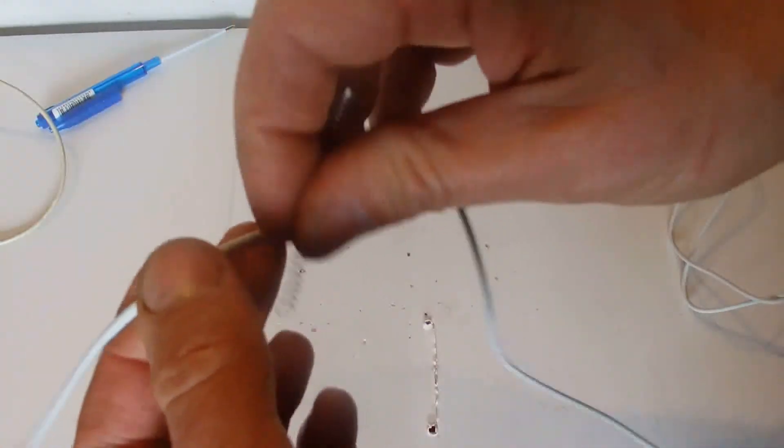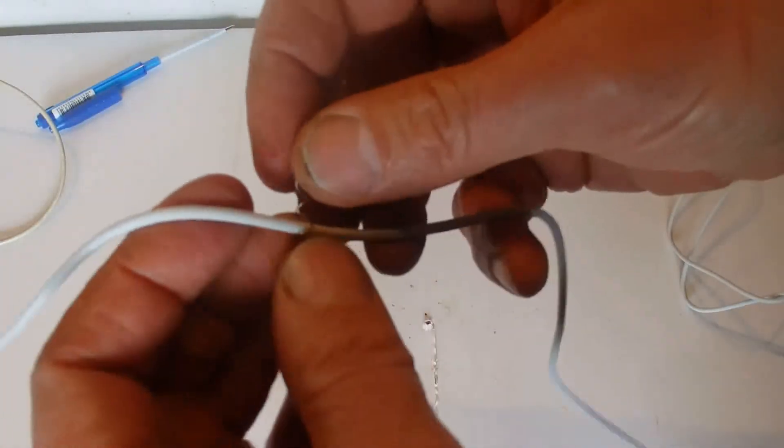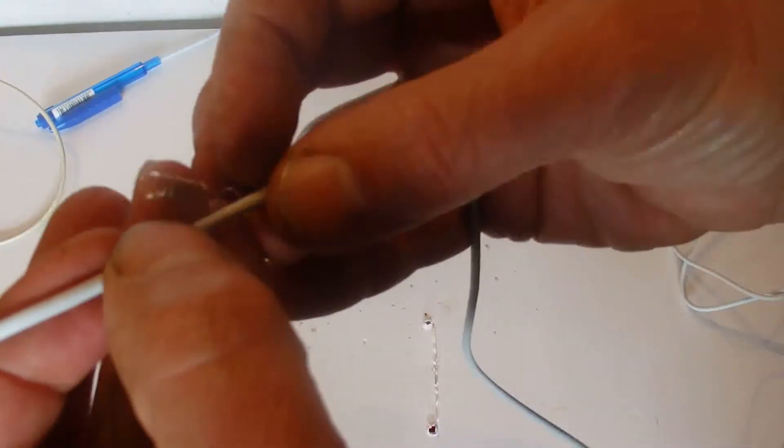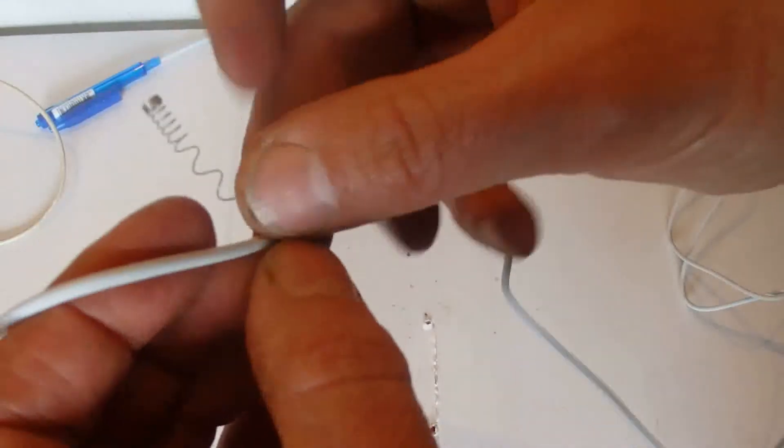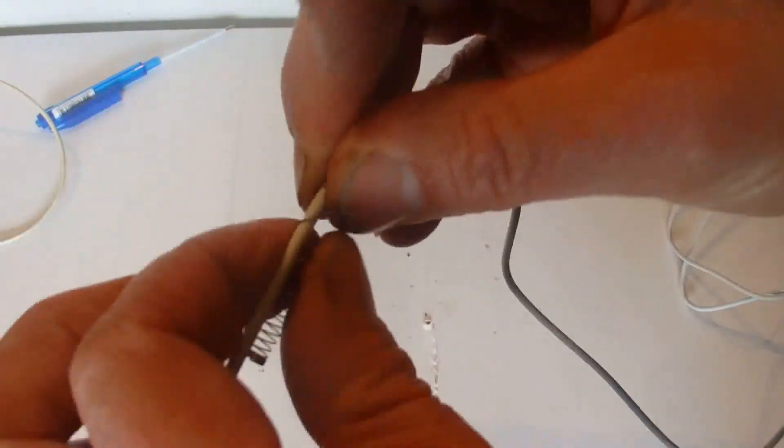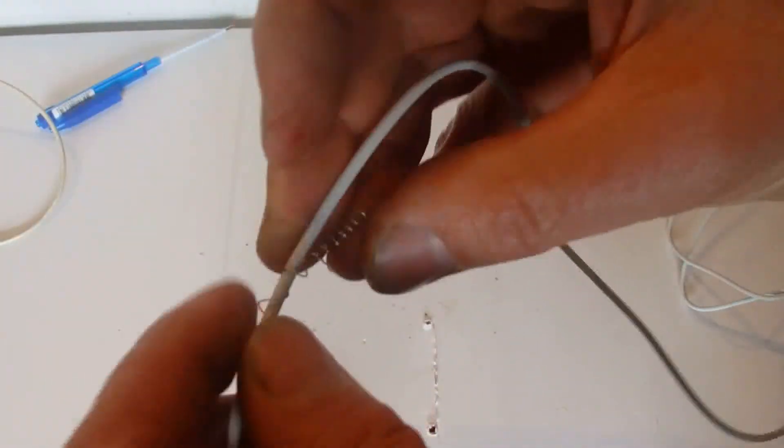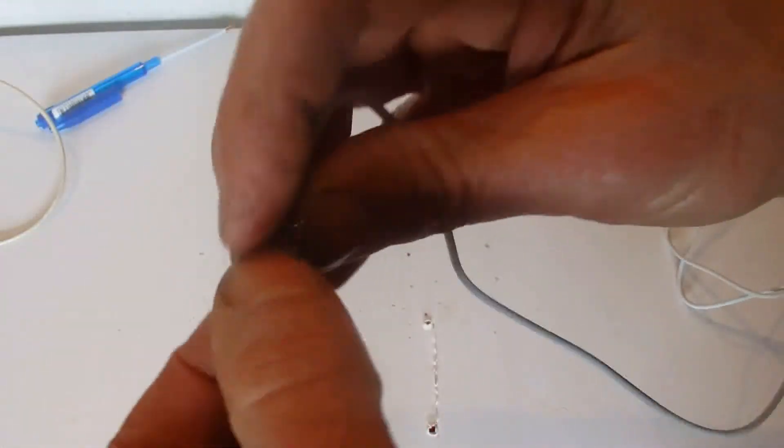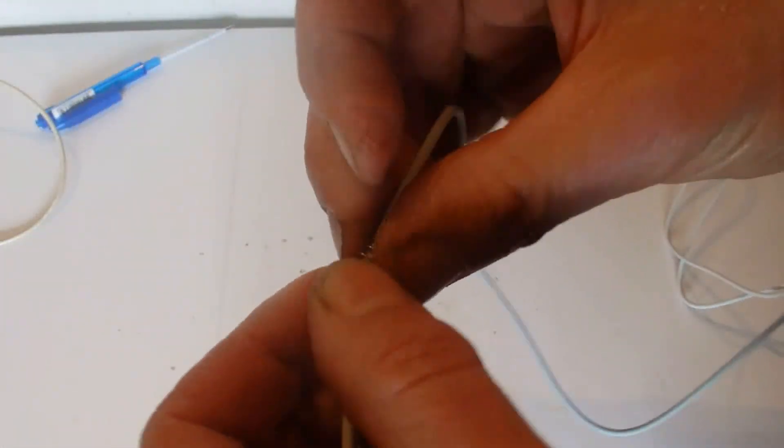And then get your cord once you've got it as wide as you can. Get your cord and slowly wind the spring right around the cord. It's a little bit fiddly.